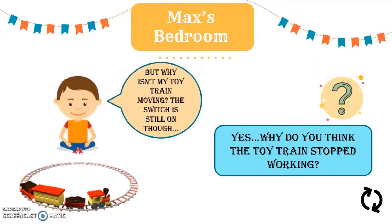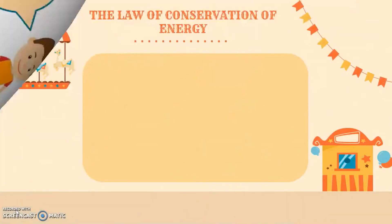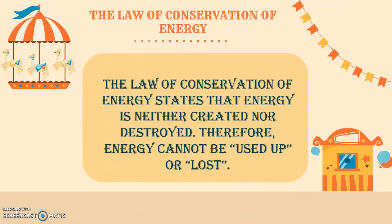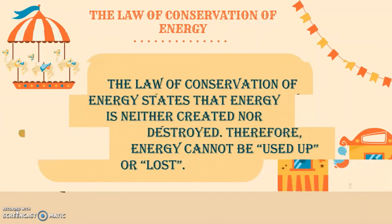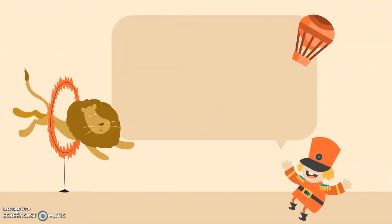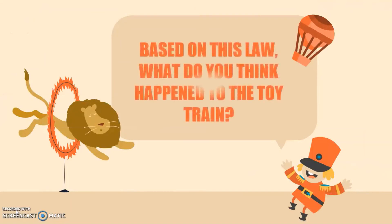Good guess! Based on the law of conservation of energy, it states that energy is neither created nor destroyed. Therefore, energy cannot be used up or lost. Now, based on this law, what do you think happened to the toy train?